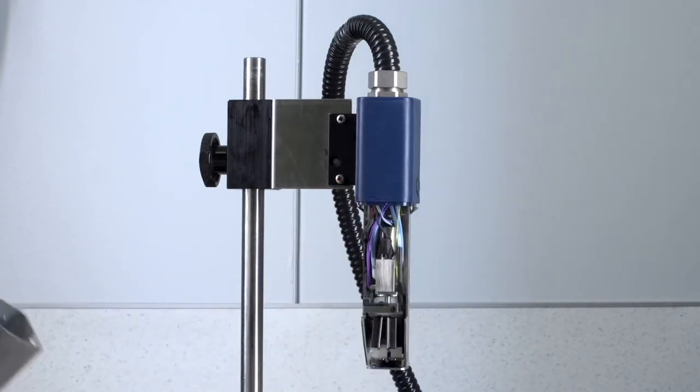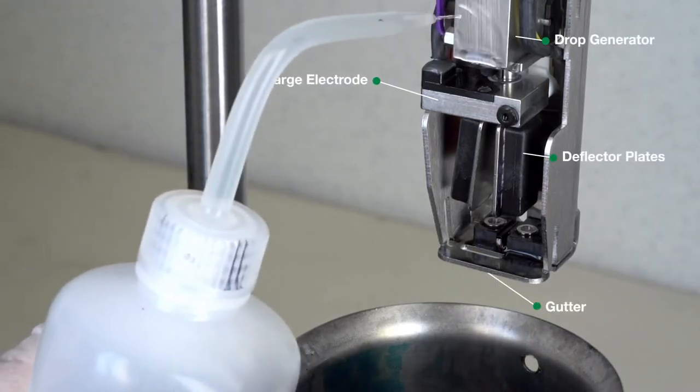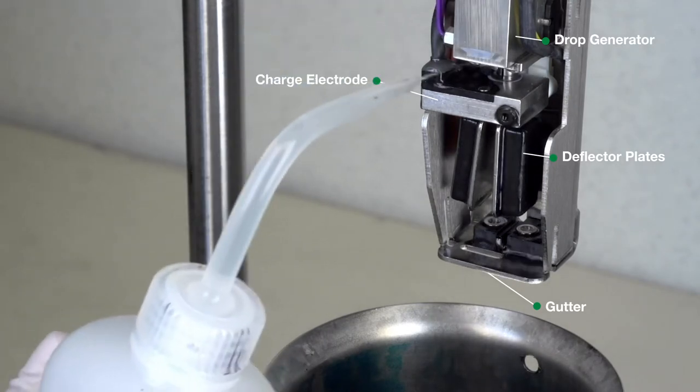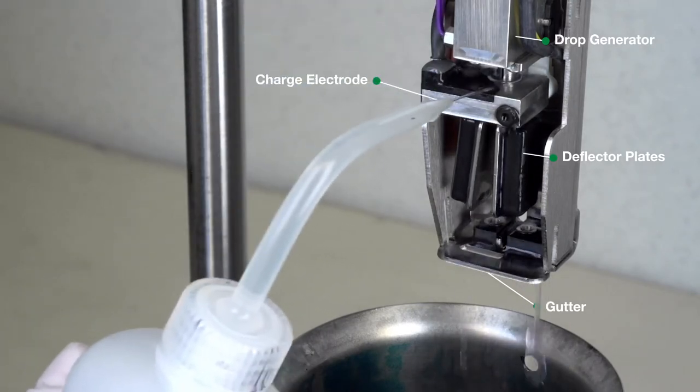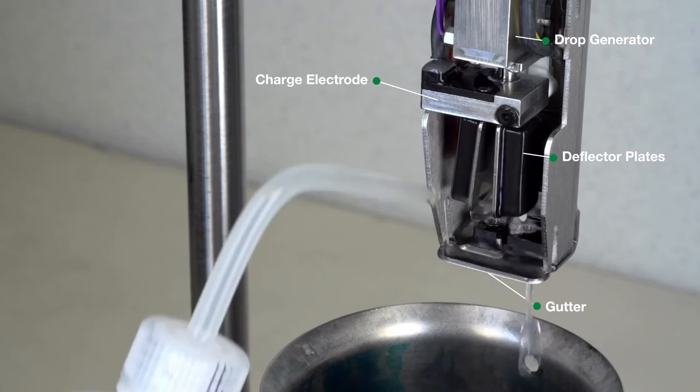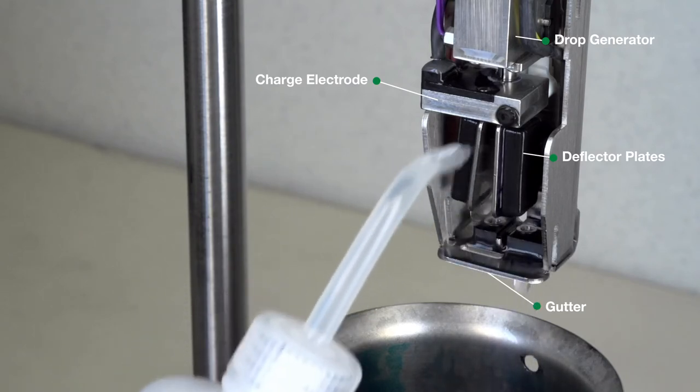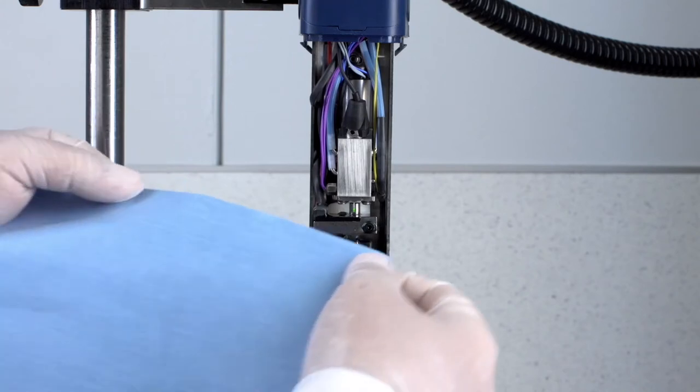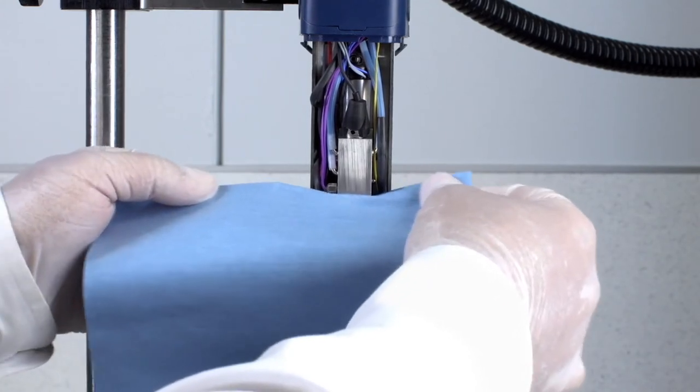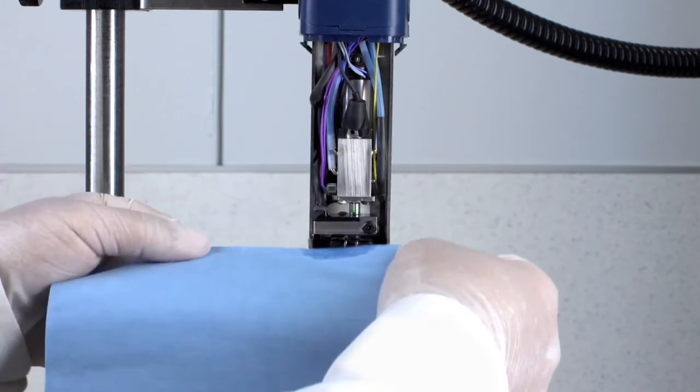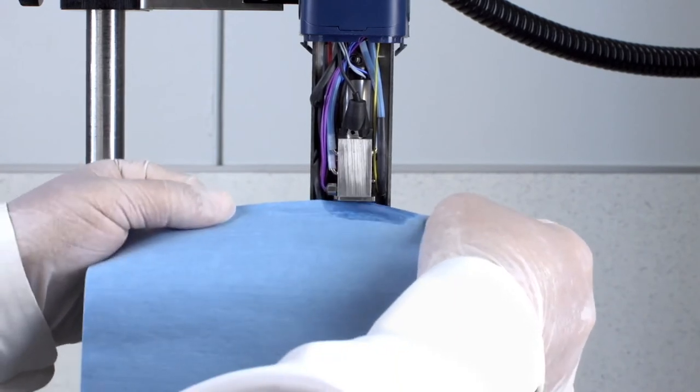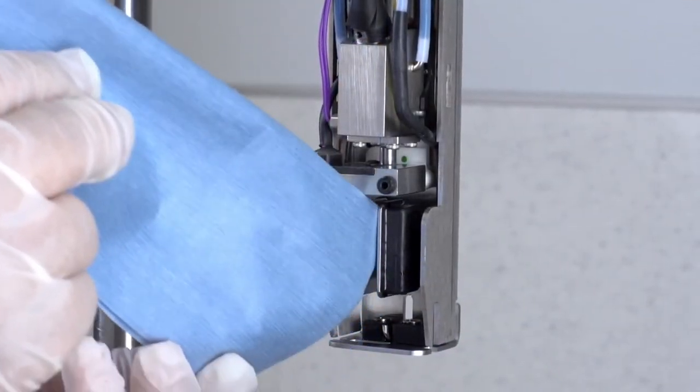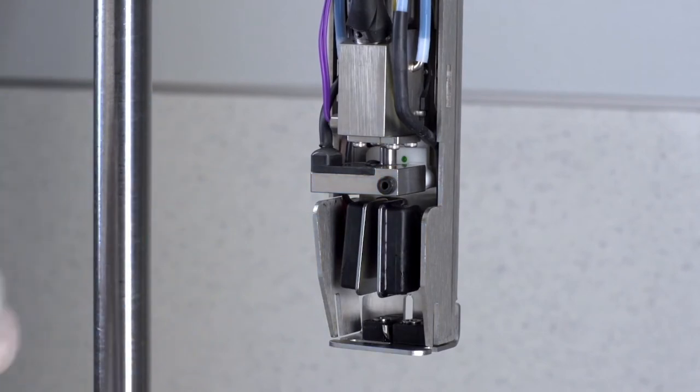With the holster removed and using an appropriate wash, clean the printhead from the drop generator down, cleaning the charge electrode, deflector plates, and thoroughly cleaning the gutter. Using a lint-free wipe, gently dry all of the components from the drop generator to the gutter. This is an important step before proceeding with the alignment.